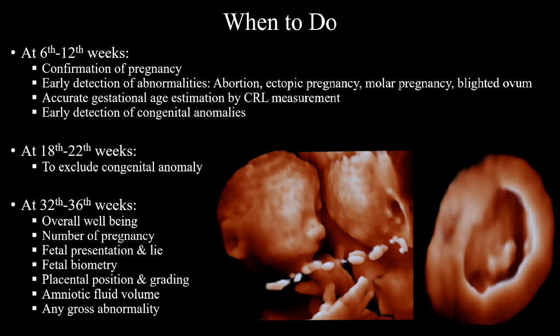At 18 to 22 weeks, we want to do our second scan. Organogenesis gets completed by the 18th week, so to detect organ-related abnormalities — that is, congenital anomalies — we do a scan at this period. Clinicians routinely send patients for an anomaly scan within this period. At 32 to 36 weeks, we want to go for the third scan. At this time, we want to make a plan for delivery. So we note the number of fetuses, presentation, lie, biometry, placental position and grading, amniotic fluid amount, and any gross abnormality. Overall, we try to make a report on fetal well-being which will help our clinicians make a better plan about delivery.